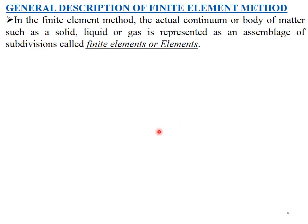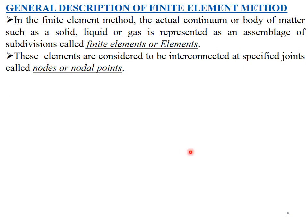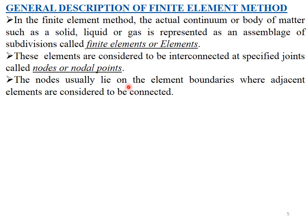The general description of the finite element method: in FEM, the actual continuum, body, or structure is an assembly of many subdivisions called finite elements or simply elements. These elements are considered to be interconnected at specific joints called nodes or nodal points. The nodes usually lie on the element boundaries where adjacent elements are considered to be connected.